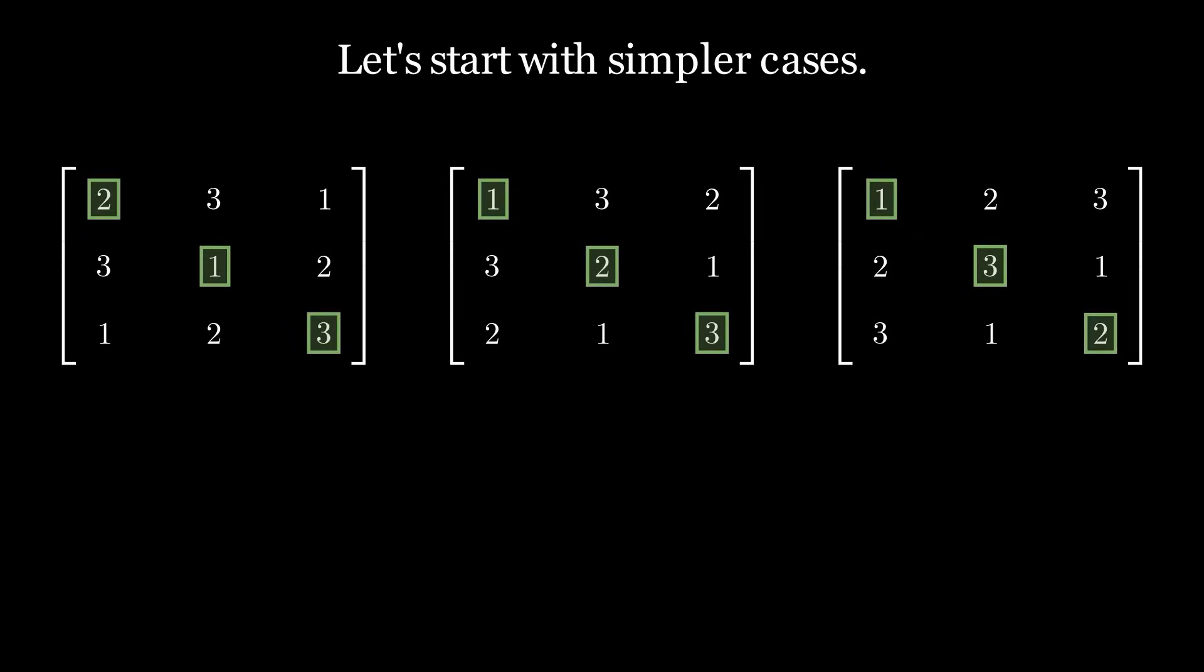Let's start with simpler cases. For example, consider 2x2 matrices. If we construct matrices that satisfy the two given constraints in the problem, we find that none of them have both 1 and 2 appearing exactly once on the main diagonal. If we construct 3x3 matrices, we find that all of them have 1, 2, and 3 appearing on the main diagonal.